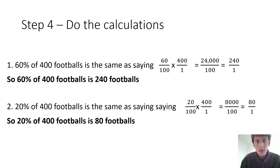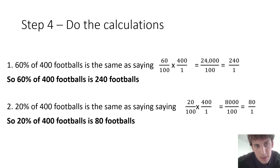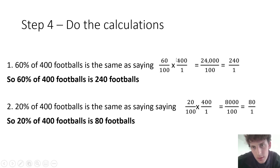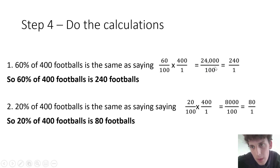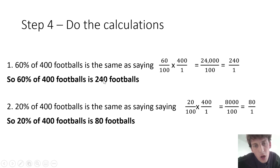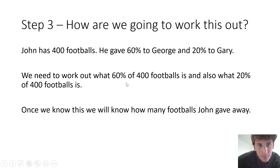So 60% of 400 footballs — remember, 60% of just means times. We can't forget that a percentage is out of 100, so we write 60 over 100 times 400 over 1. 60 times 400 is 24,000, and 100 times 1 is 100. We always need to simplify — reduce by 10, then by 10 again, and we're left with 240 over 1. So 60% of 400 footballs is 240 footballs. He gave 240 footballs to George.